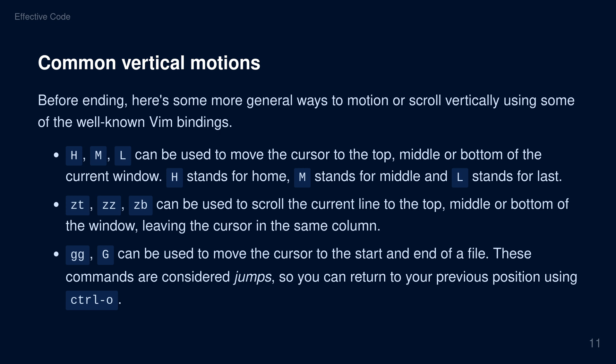ZT, ZZ, and ZB can be used to scroll the current line to the top, middle, or bottom of the window, leaving the cursor in the same column. gg and capital G can be used to move the cursor to the start and end of a file. These commands are considered jumps, so you can return to your previous position using Ctrl-O.